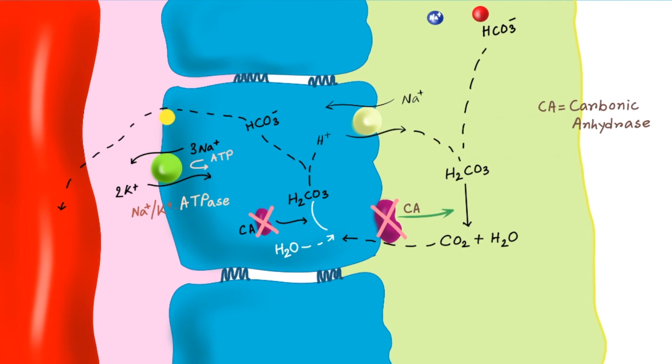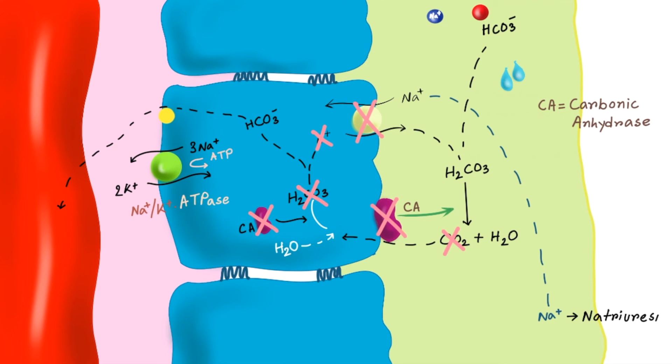Now if we block the carbonic anhydrase enzyme, what will happen? It will not be able to break the carbonic acid so carbon dioxide will not be generated. If carbon dioxide is not there then intracellular carbonic acid will not form and there will be a deficiency of proton also. As we discussed, the sodium ion is reabsorbed in exchange of hydrogen ion. So the function of the sodium proton counter-transporter or exchanger will be altered and sodium absorption will be hampered. So more sodium will come out in the urine. Excess sodium in the urine causes natriuresis. Bicarbonate will also spill out in the urine.